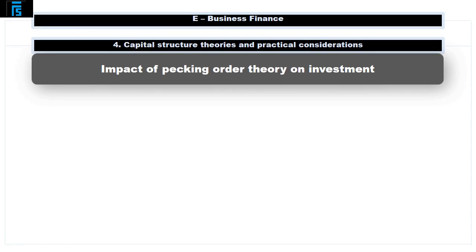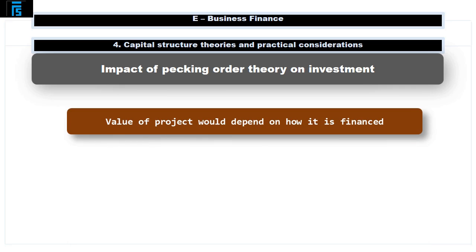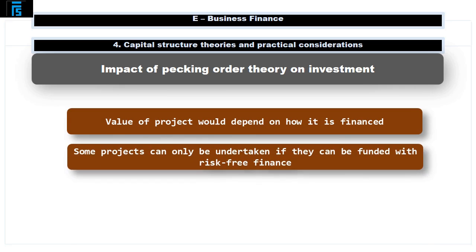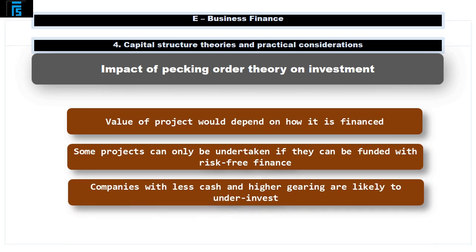So how would this theory impact on investment? The pecking order theory means that the value of a project would depend on how it is being financed. Some projects will only be undertaken if they can be funded internally or with risk-free finance. Companies with less cash and higher gearing will therefore be more prone to underinvest.